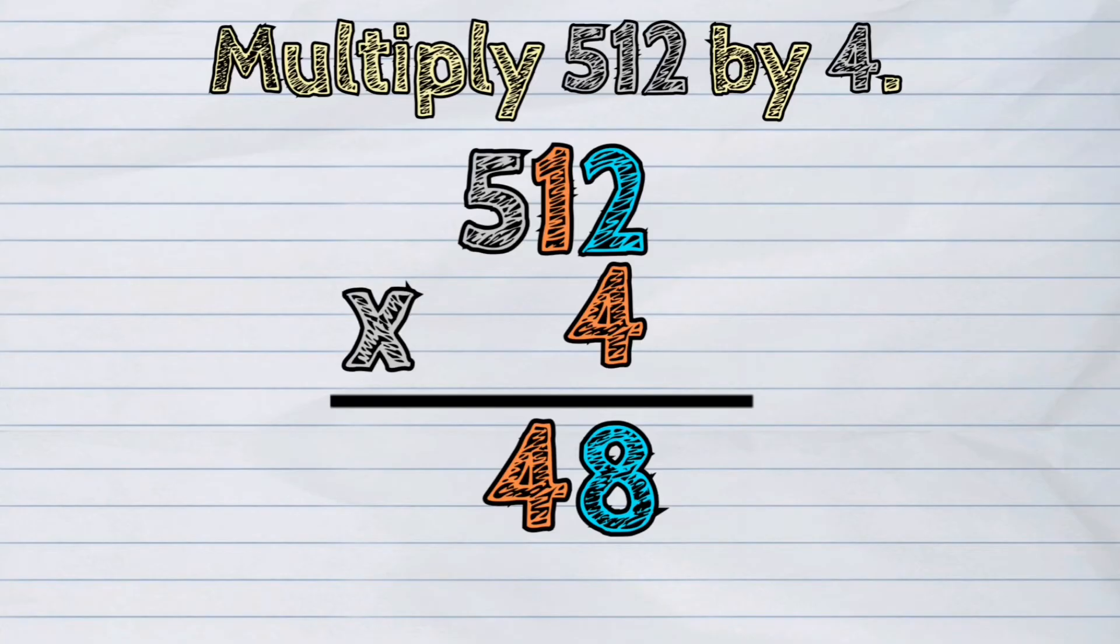And then, we will multiply the hundreds by 4. 5 times 4. The product is 20.